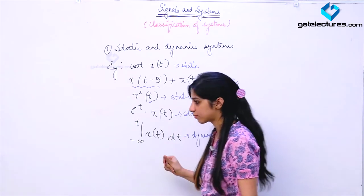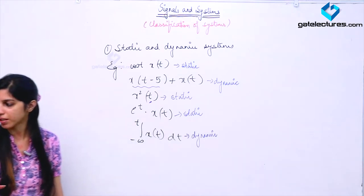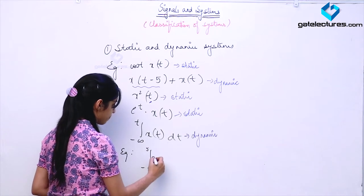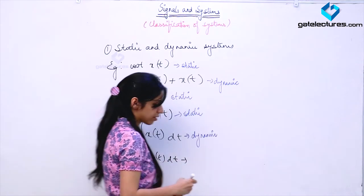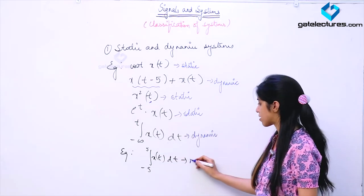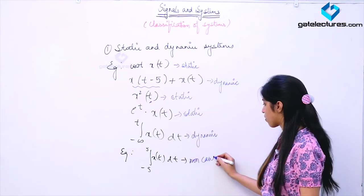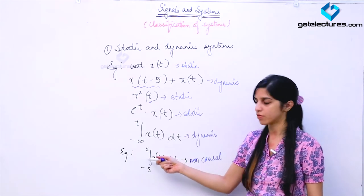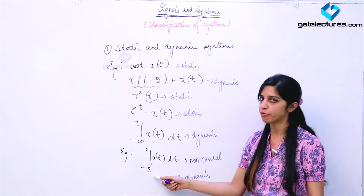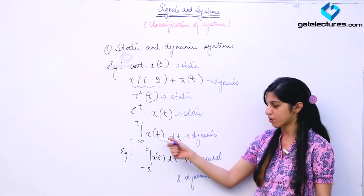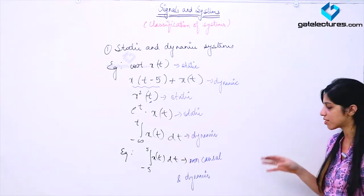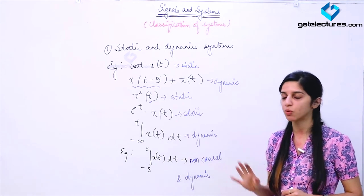We are considering an example where the system is non-causal as well as dynamic. Since the output depends on future values of the input, this is going to be a non-causal system. Also, this is going to be a dynamic system, because this system must have an arrangement of memory — it is storing values from minus 5 to 5. So this is a system which is non-causal as well as dynamic. Causality of a system and memory of a system are two different concepts — do not confuse them.